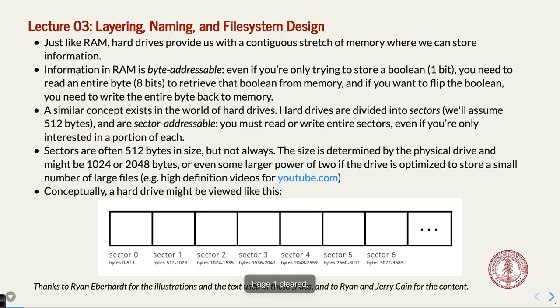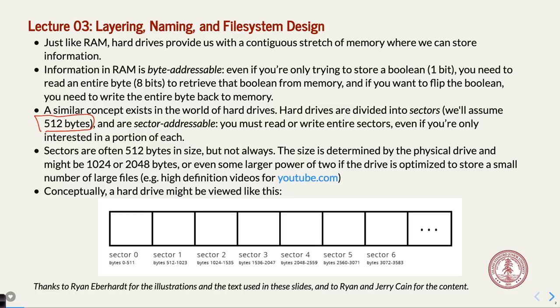A disk has things called blocks, or sectors — you can use those terms interchangeably. There is some fixed amount of bytes per sector: a lot of times it's 512, on some disks it's as much as 4096. That is the smallest chunk of data you can read or write from a drive. If you want to read one byte from a drive, you can't — you have to read all 512. Same for writing.